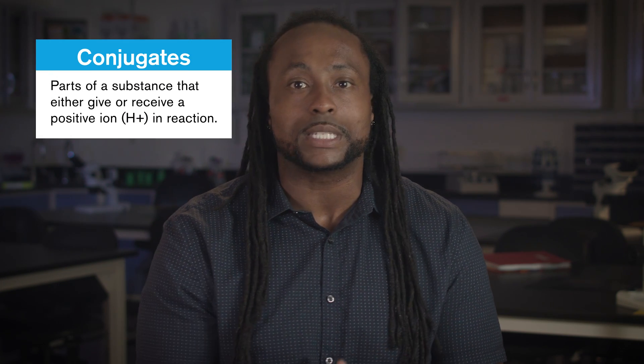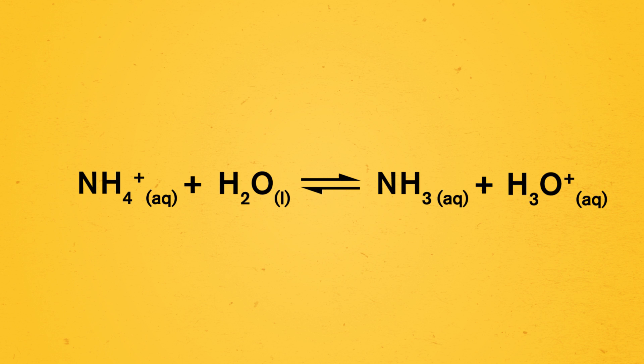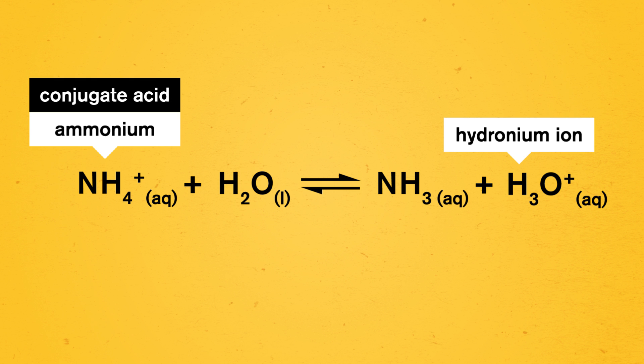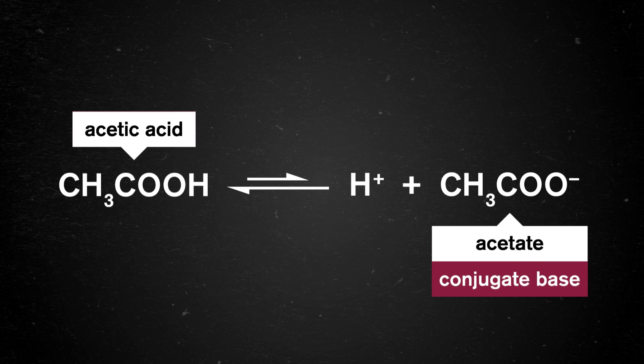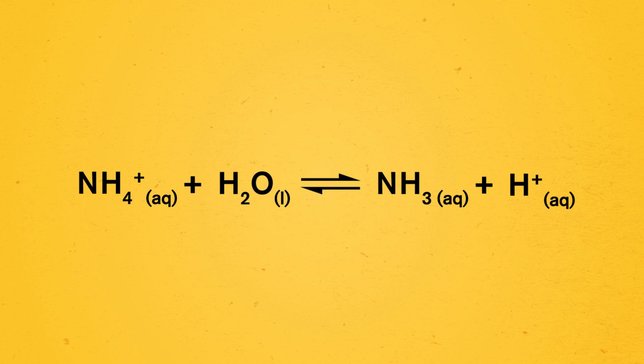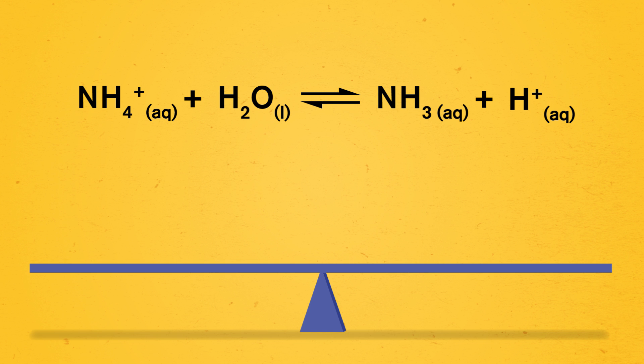For example, our blood contains a buffer made from carbonic acid and a bicarbonate ion that maintains a narrow pH range. If we didn't have that buffer, our blood pH could rise or fall out of that healthy range, which could be deadly. Buffers work in pairs, using teamwork to prevent the pH of a solution from changing drastically, and it's all to do with ions. Buffers require conjugates — the parts of substances that either give or receive a positive ion in a reaction. A conjugate acid is a weak acid that donates or loses its H-plus ion. Ammonium is a conjugate acid because, when in solution, it donates an H-plus ion to become ammonia, which is a weak base.